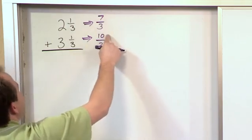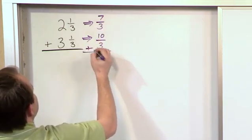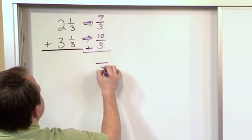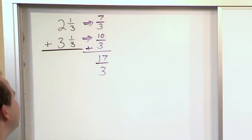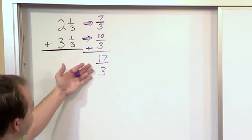Now you have 7/3 and 10/3, and you can add these together because we already have a common denominator, we keep it. Seven plus ten is seventeen. Now this is the answer, 17/3, that's the answer, but you know this is improper.